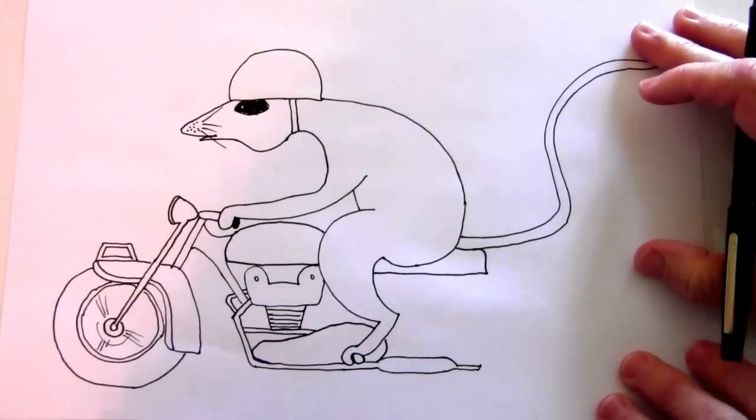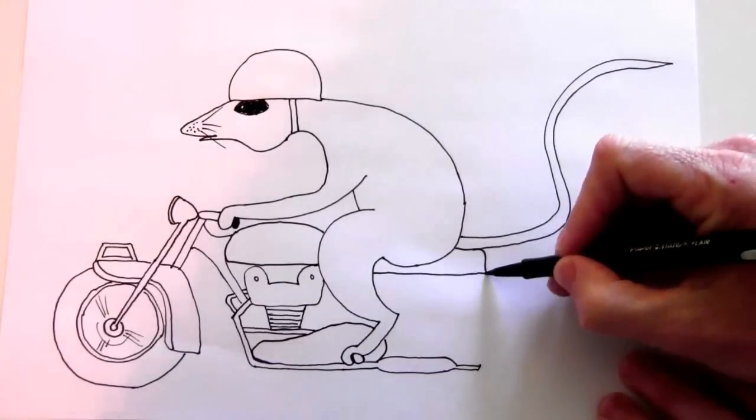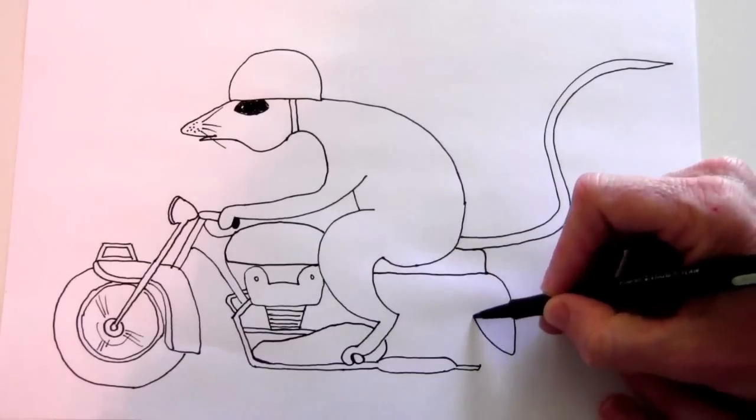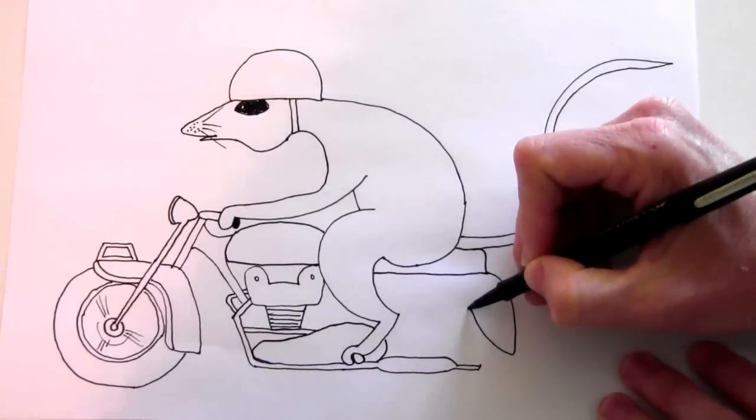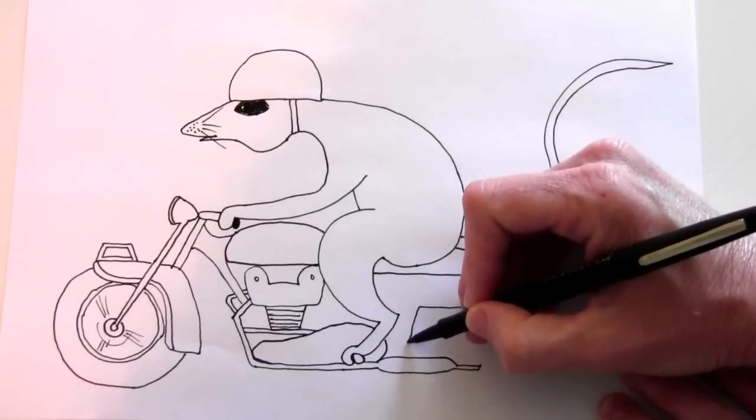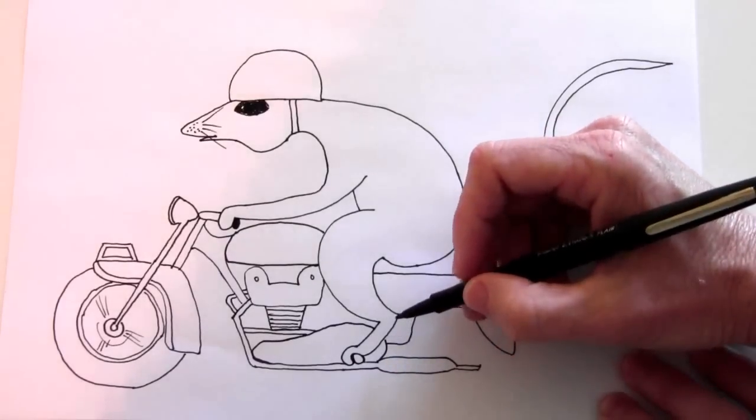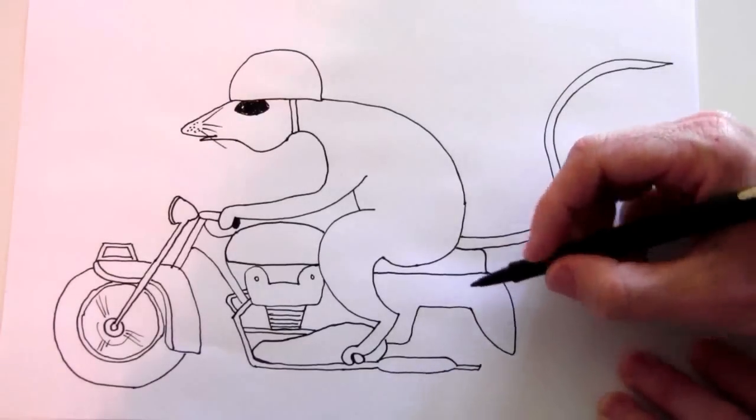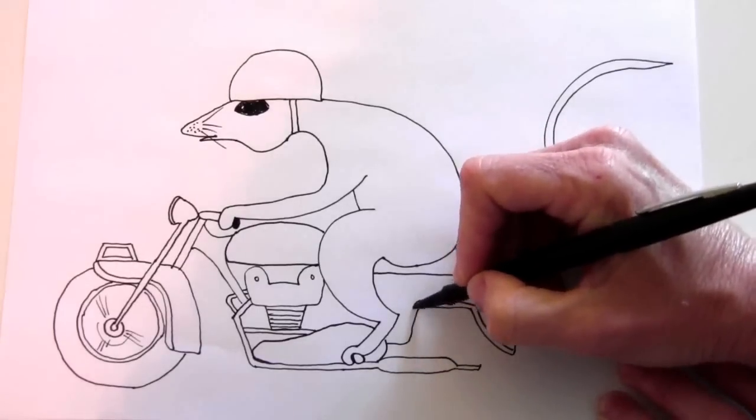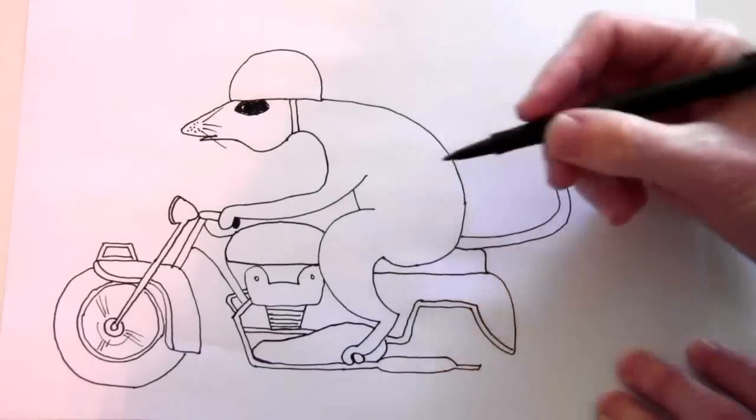And now we draw the back wheel. So this fender comes down, it goes up, over, and down. And then a line that follows this here. That's the fender.